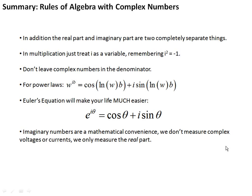Let's summarize what we've learned. Rules of algebra with complex numbers: In addition, the real part and the imaginary part are two separate things. You add the real parts and you add the imaginary parts. They don't mix. In multiplication, you just treat i as a variable, remembering that i squared equals minus 1. You work the multiplication out with algebra the way you would with any polynomial equation.